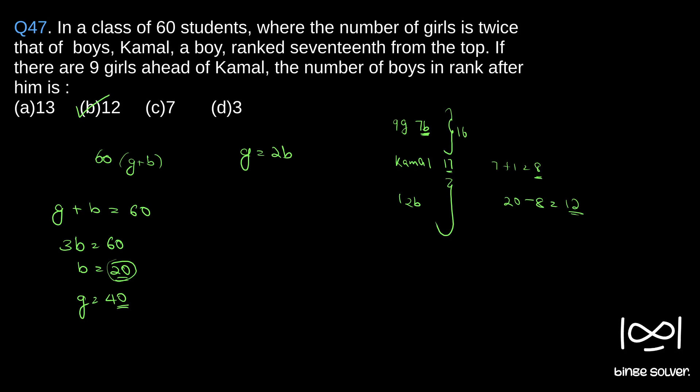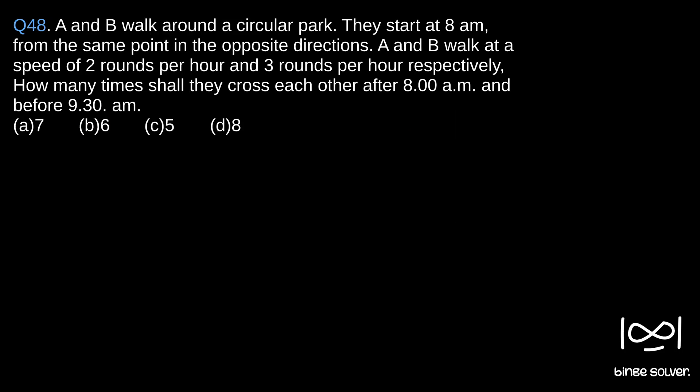Next question, question 48. A and B walk around a circular park. They start at 8 AM from the same point in opposite directions. A and B walk at a speed of 2 rounds per hour and 3 rounds per hour respectively. How many times shall they cross each other after 8:00 AM and before 9:30 AM?